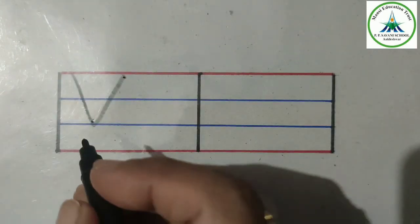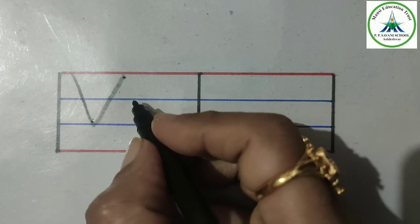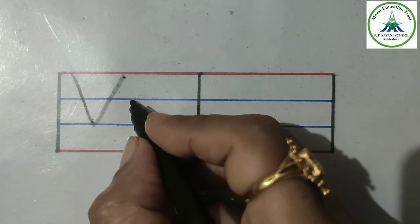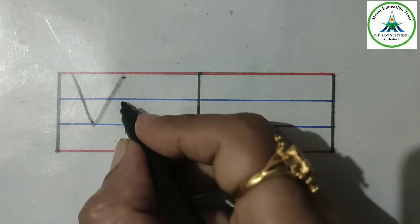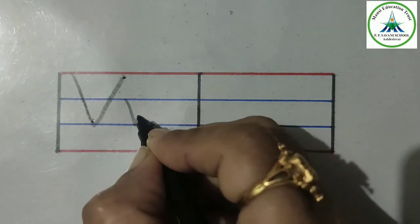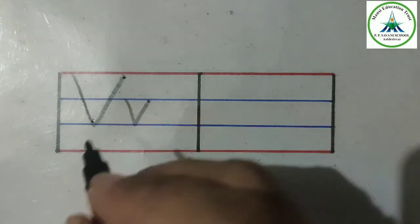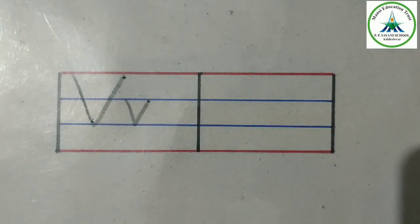So this is capital letter V and to write small letter V, make it in these two lines, two middle lines. Make a slanting line and then opposite slanting line. This is small letter V.